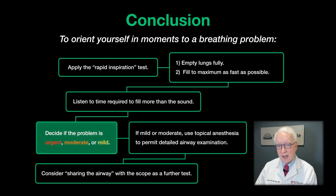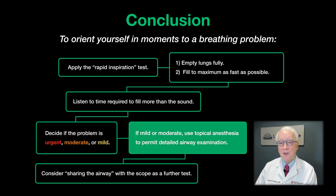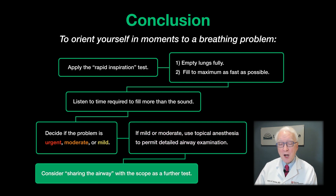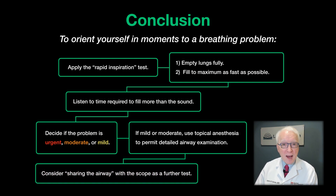If we get to three seconds, then it's a fairly bad airway problem. It gives you a sense — along with their demeanor and everything — of whether it's now safe to proceed with a detailed examination using topical anesthesia, which allows you to look anywhere you want in the airway including down into the trachea. This can be done in an ER or in an office setting safely, as long as you're oriented to the magnitude of the problem. Consider using the shared airway test, where you pass your scope through the area of narrowing — that gives you additional information about how marginal this person's airway problem is. Well there you have it, a rapid way of orienting yourself, and thank you very much for listening.